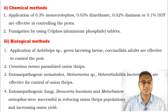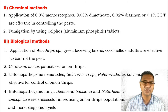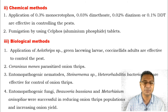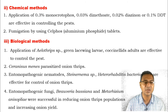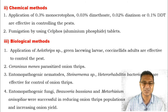Entomopathogenic nematodes, namely Steinernema species and Heterorhabditis bacteriophora, are effective to control onion thrips. Entomopathogenic fungi are also effective in declining the population of this pest and increasing onion yield, especially Beauveria bassiana and Metarhizium anisopliae. This completes the topic.